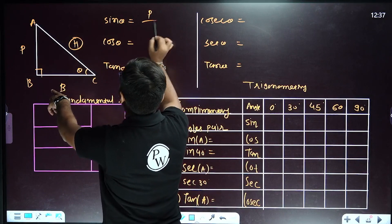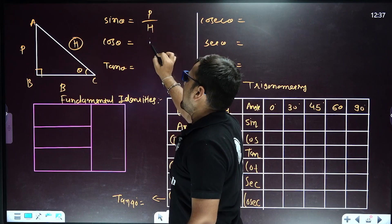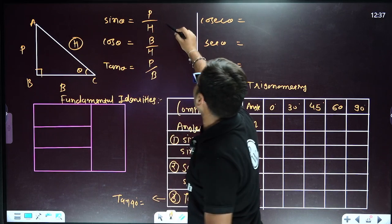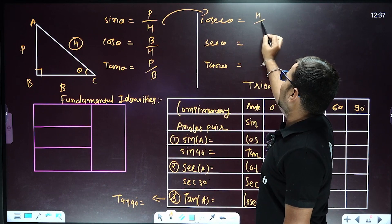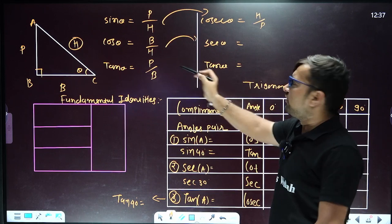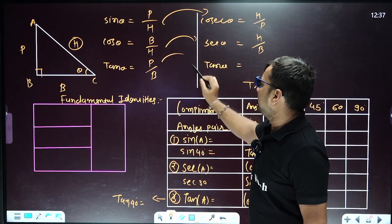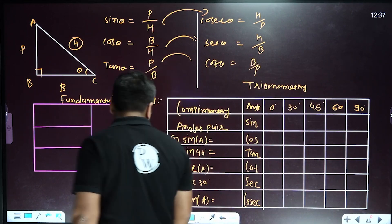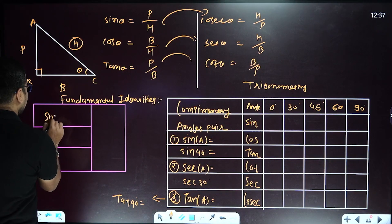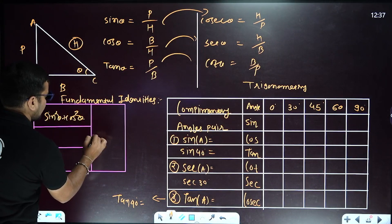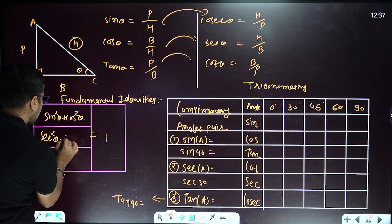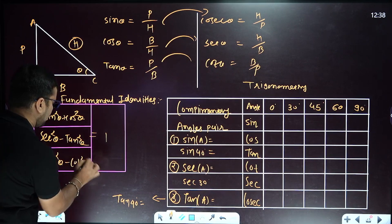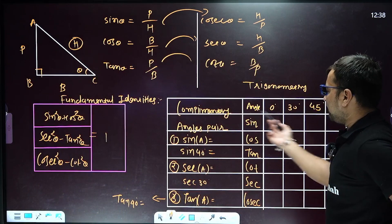Chapter 8: Trigonometry. sin θ equals perpendicular upon hypotenuse; cos θ equals base upon hypotenuse; tan θ equals perpendicular by base. Their reciprocals: cosec θ equals hypotenuse by perpendicular; sec θ equals hypotenuse by base; cot θ equals base by perpendicular. The three fundamental identities are: sin²θ plus cos²θ equals 1; sec²θ minus tan²θ equals 1; cosec²θ minus cot²θ equals 1.